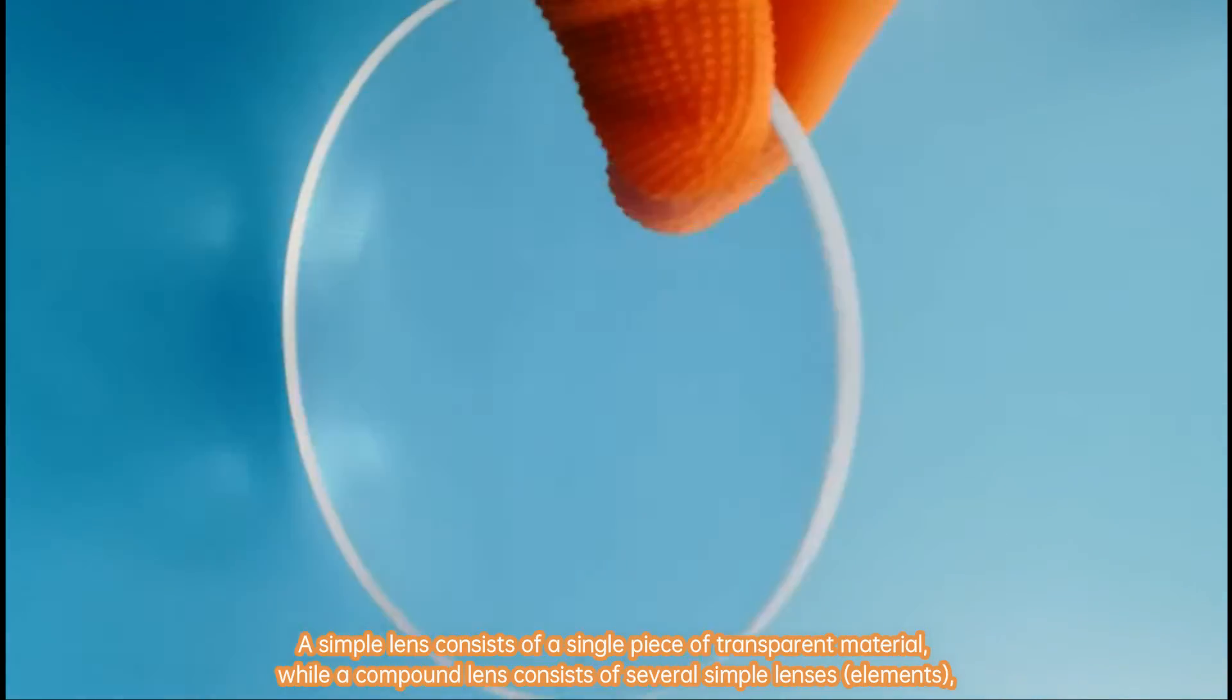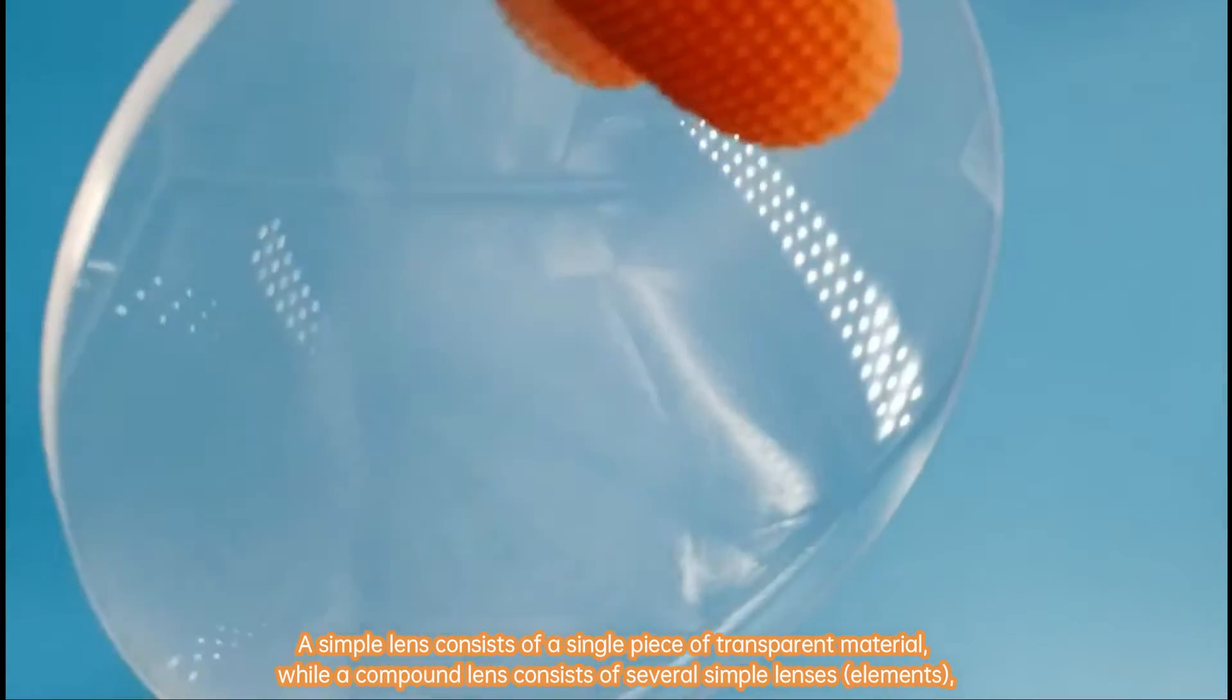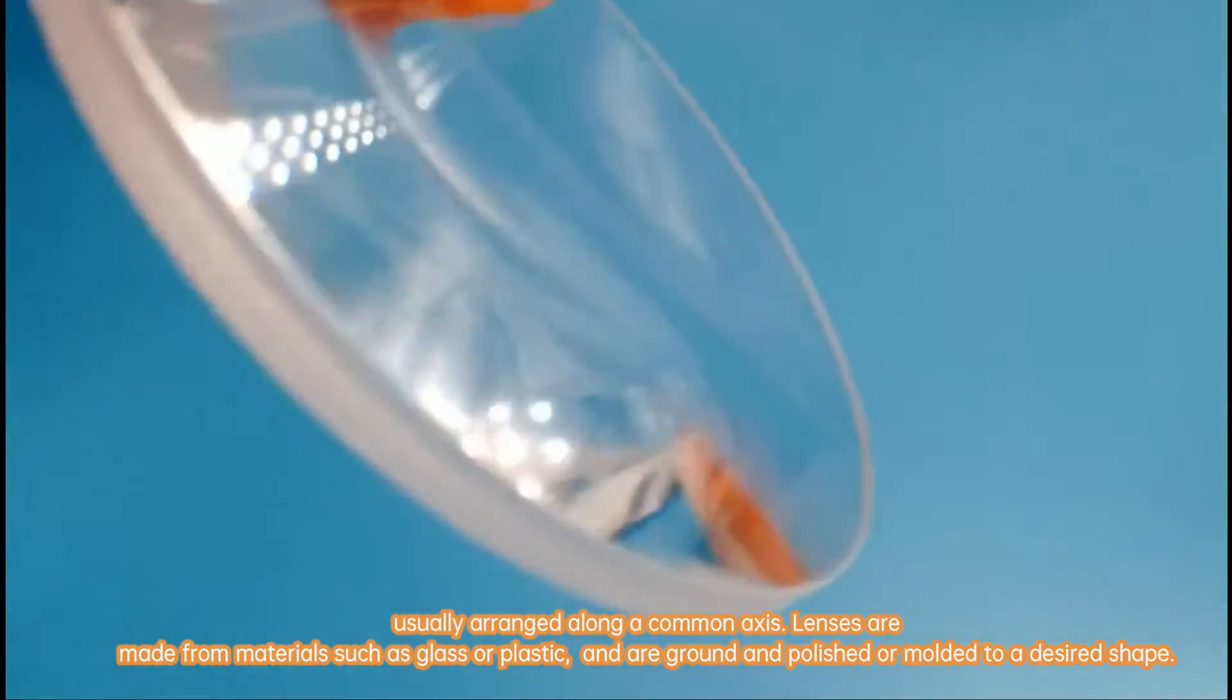A simple lens consists of a single piece of transparent material, while a compound lens consists of several simple lenses, elements, usually arranged along a common axis.